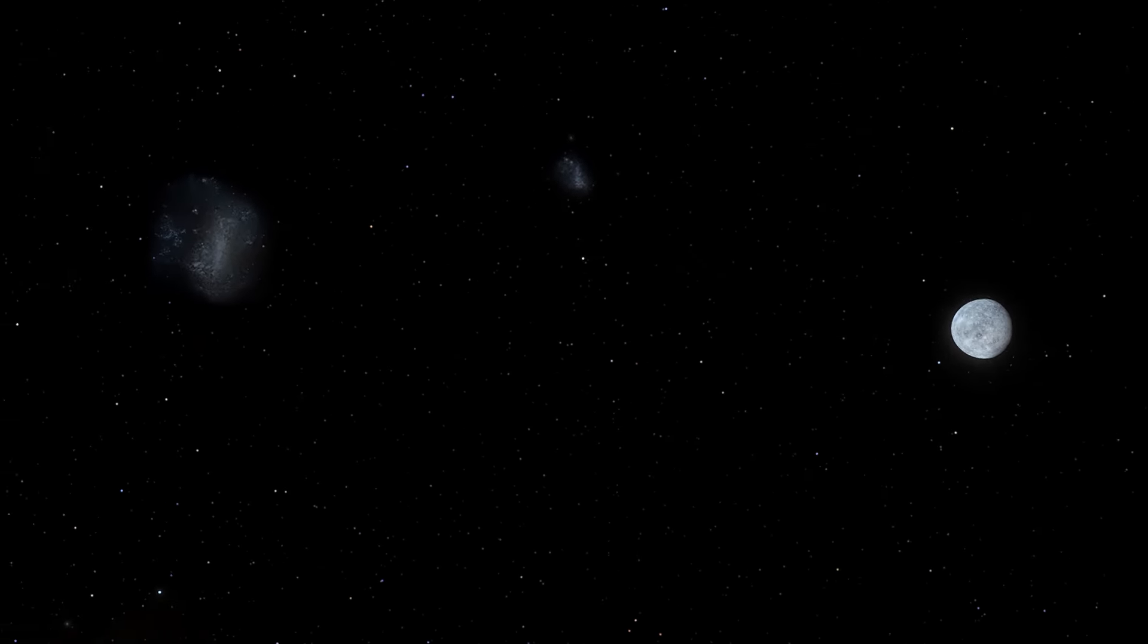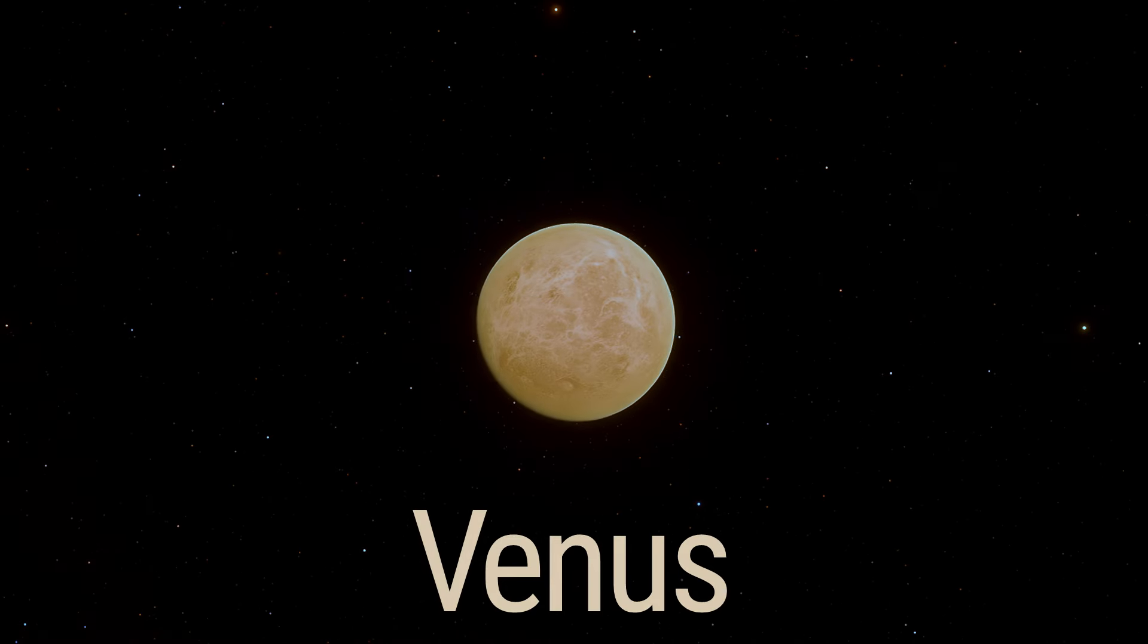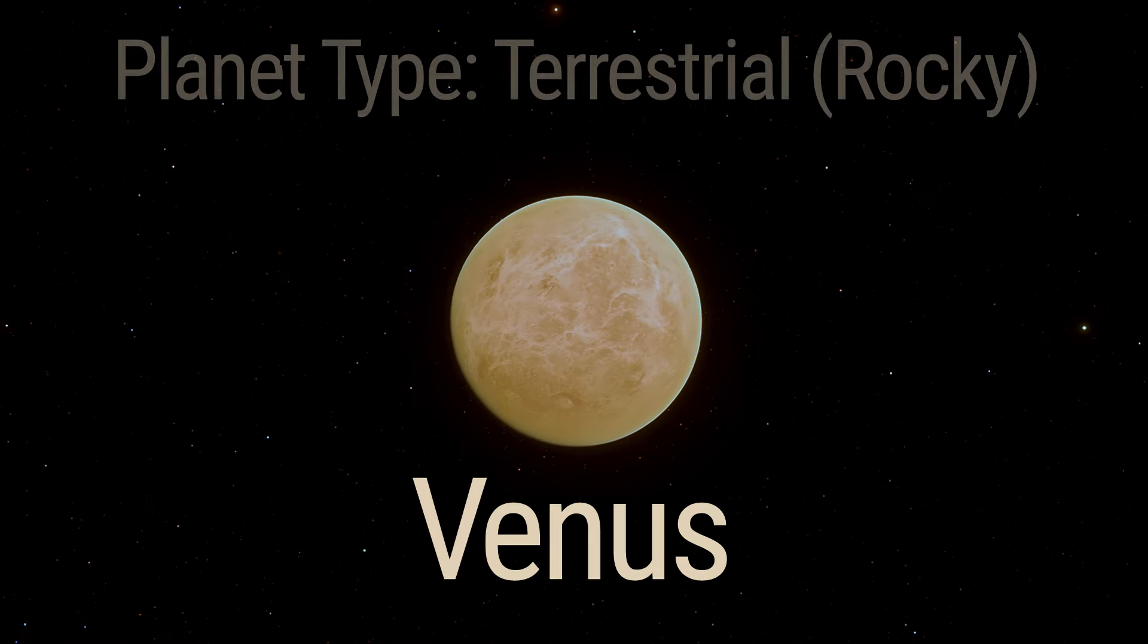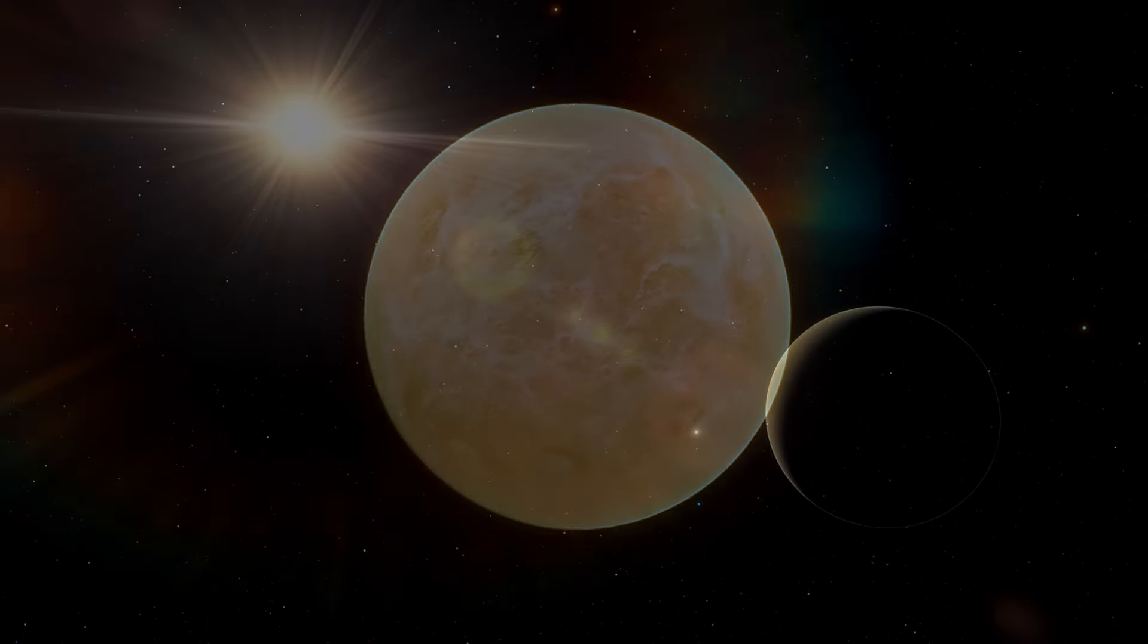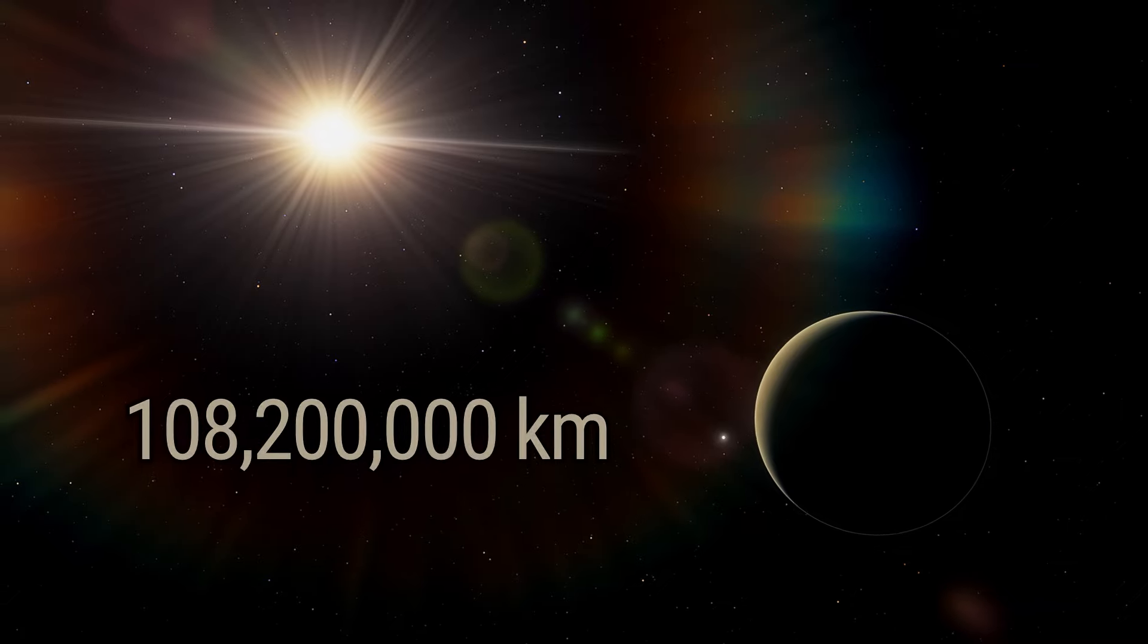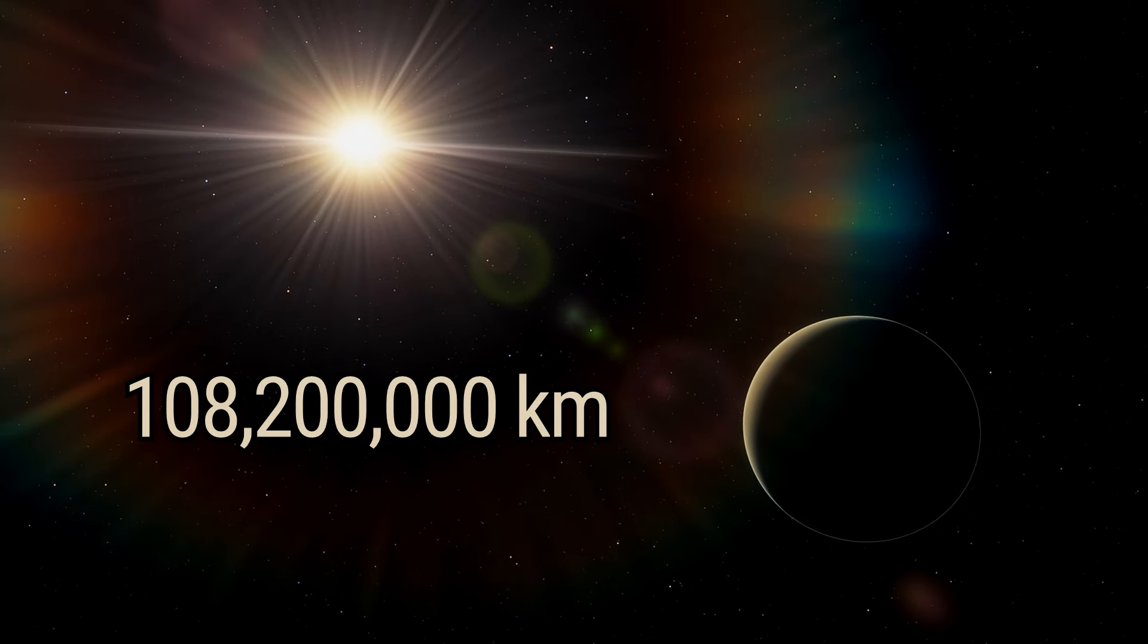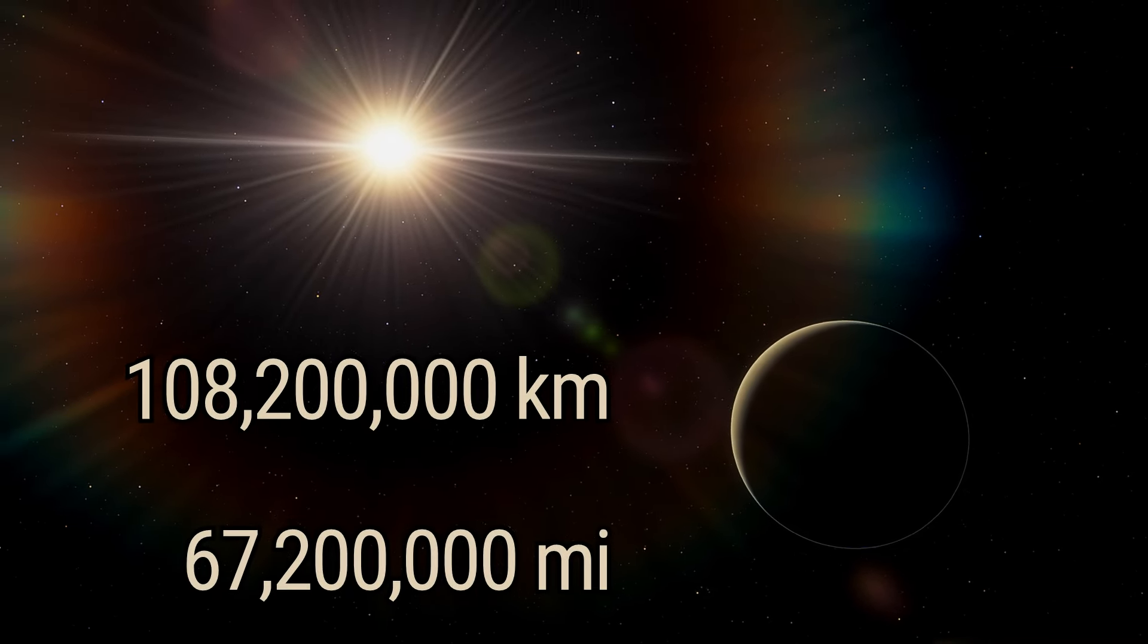Leaving the battered surface of Mercury, we glide towards Venus, the next terrestrial-type planet on our journey. Venus orbits the sun at an average distance of 108.2 million kilometers, or 67.2 million miles.